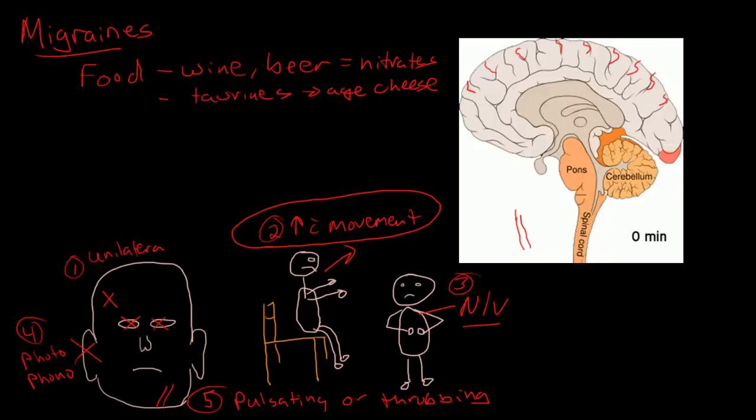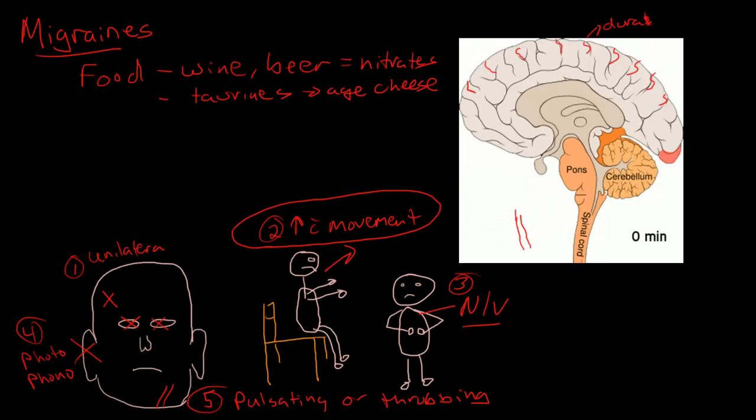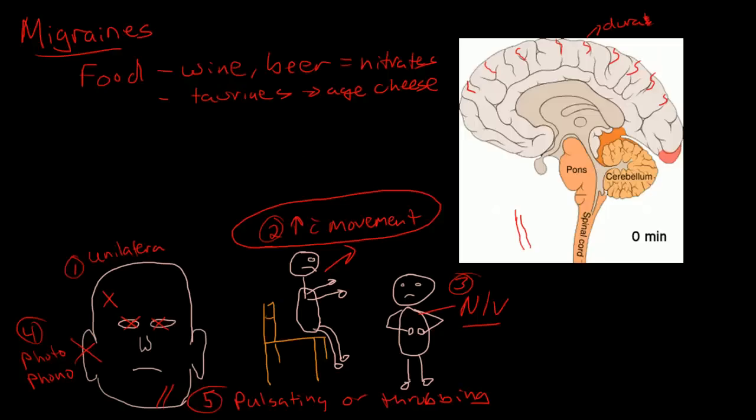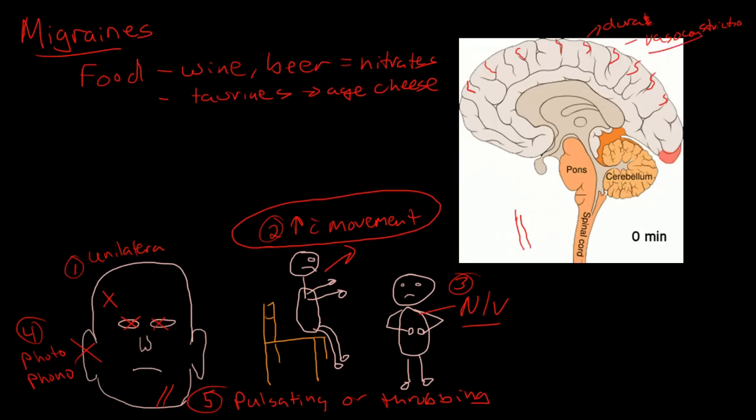But this is largely been discounted. This is actually the theory behind the development of triptan medications, and we thought that triptans were going to be a successful medication for treating migraine pain because it caused vasoconstriction. And triptans do work, but now we're thinking that the reason that they work has nothing to do with the fact that they cause vasoconstriction, that it probably has a separate mechanism that has to do with their effects on serotonin.